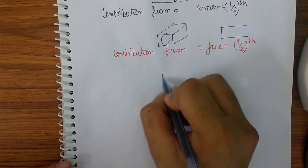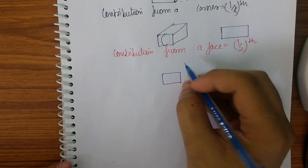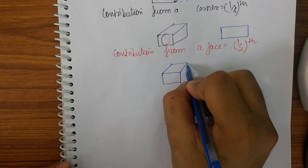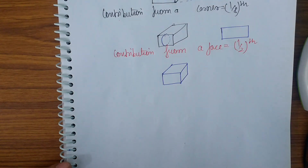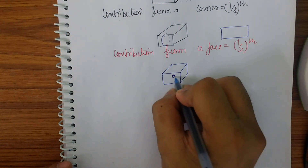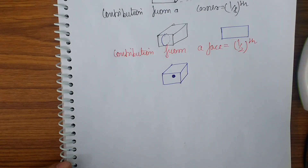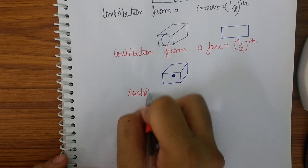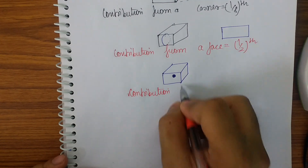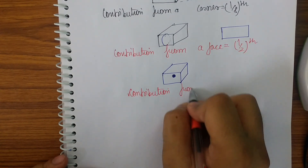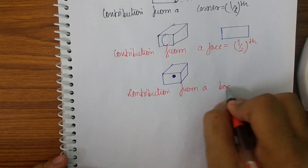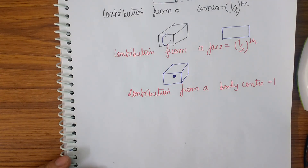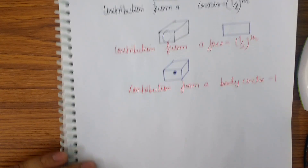The derivation of what will be the contribution from a body center — the body center is the center of the cube. The center will be here, and it can occupy one full atom. So the contribution from a body center will be one atom — I will get one full atom inside a cube.